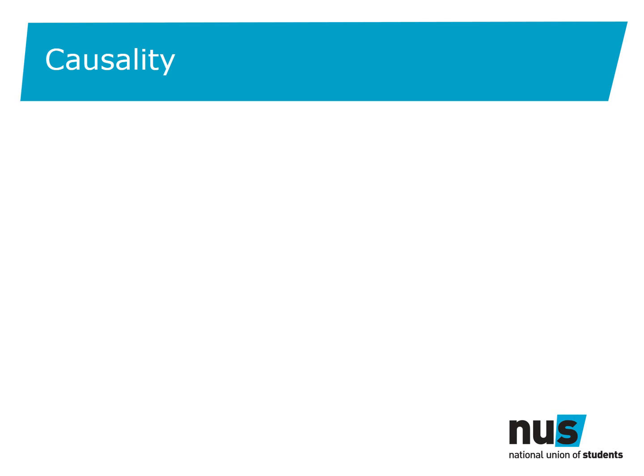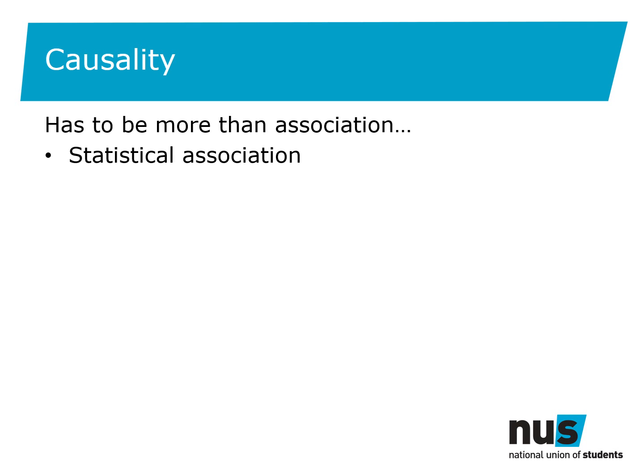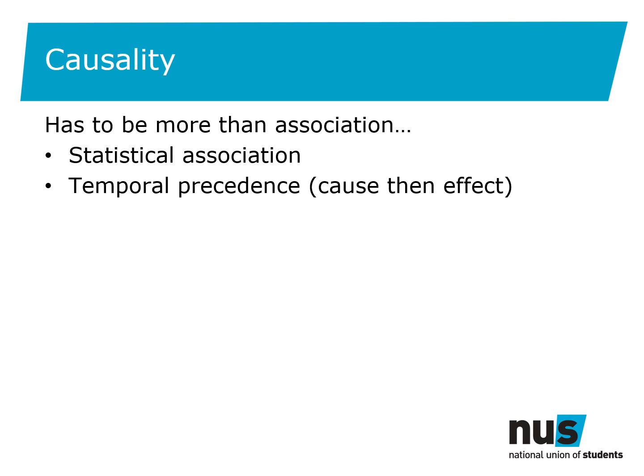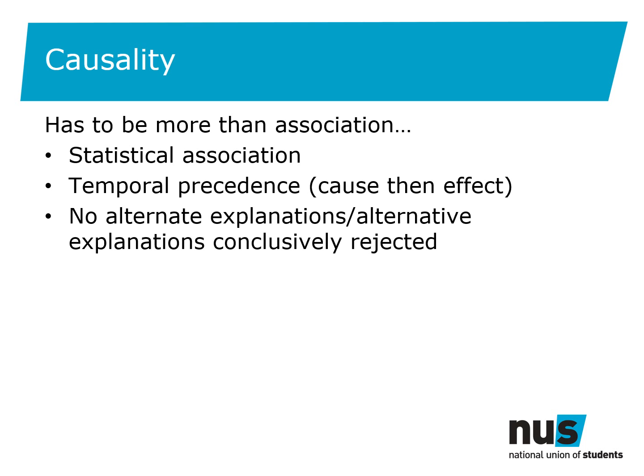So if you want to state that one thing caused another, you need to prove causality. Proving causality requires more than just proving an association between two variables. A statistical association or correlation is necessary, but you must also be able to prove temporal precedence — meaning that the cause necessarily came before the effect. You also need to consider any alternative explanations for your findings. If you can't reject the alternative explanation, you can't conclusively demonstrate causality.